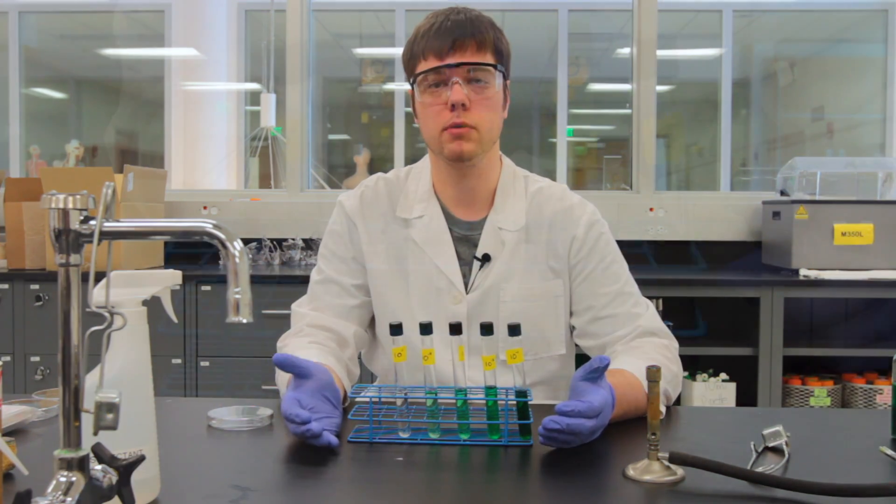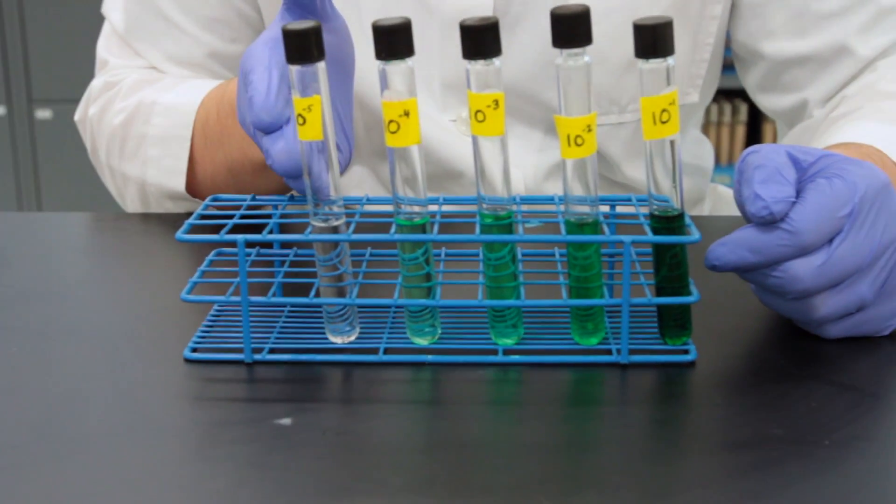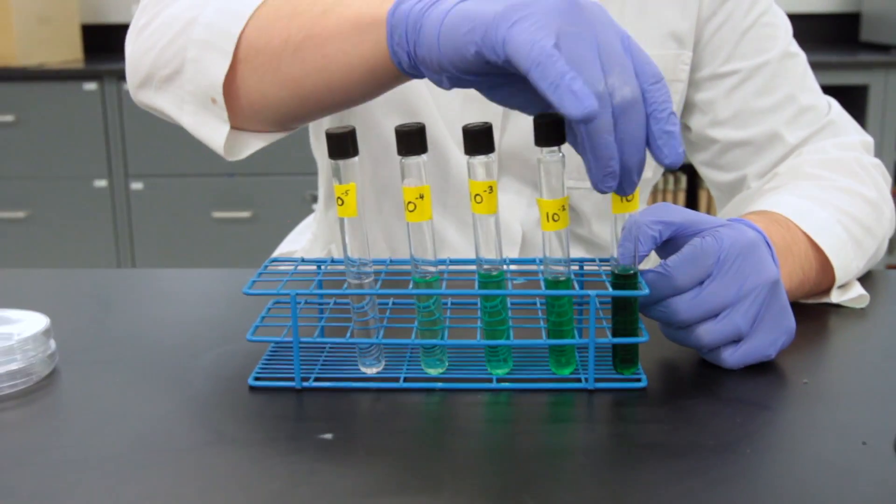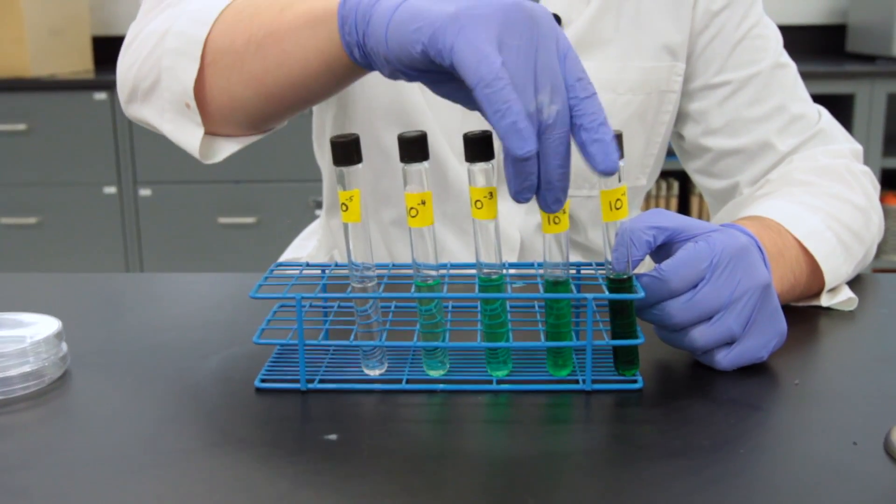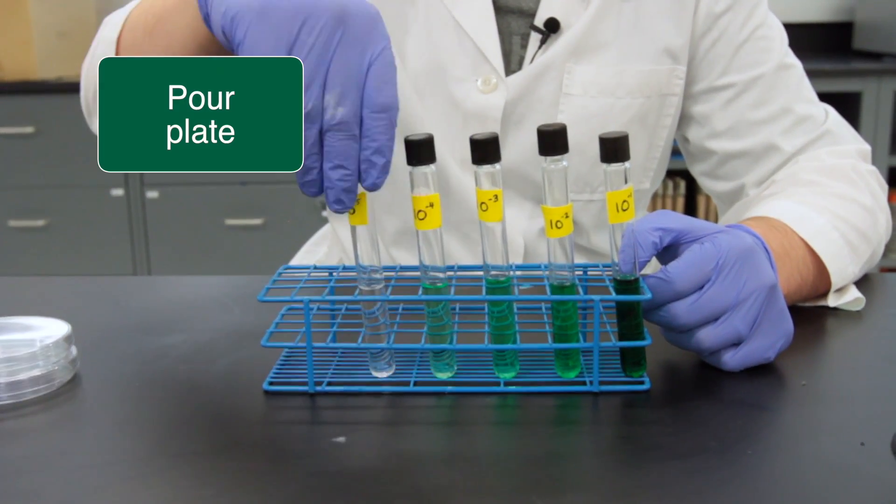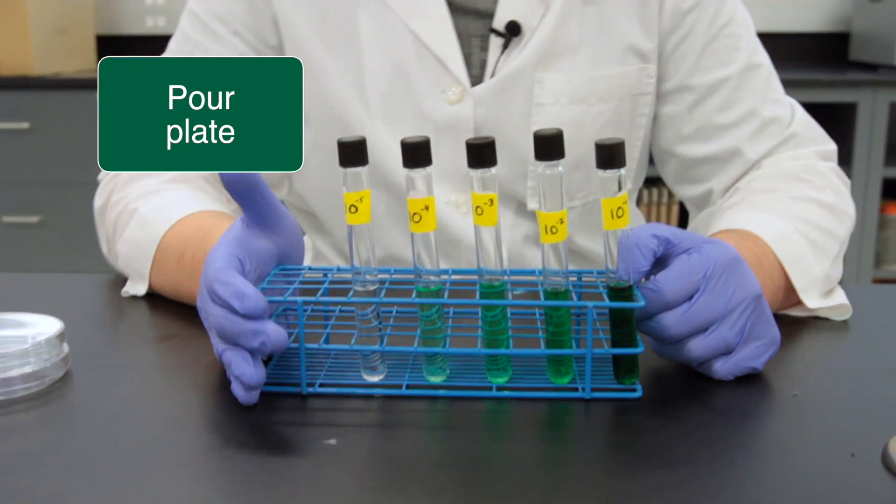Now this should be reflected in your experiment. You should see varying degrees of turbidity as you go down your dilution series. Now what we need to do is actually see how much bacteria is in a certain set of our dilutions, so we need to plate that out on a plate.